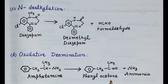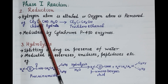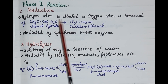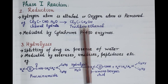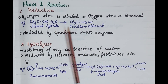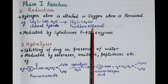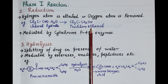The next type of phase 1 reaction is reduction. In reduction, a hydrogen atom is added or an oxygen atom is removed from the drug. For example, an oxygen atom is removed and chloral hydrate is metabolized to trichloroethanol. This trichloroethanol is further metabolized by phase 2 reaction and is excreted in the urine.